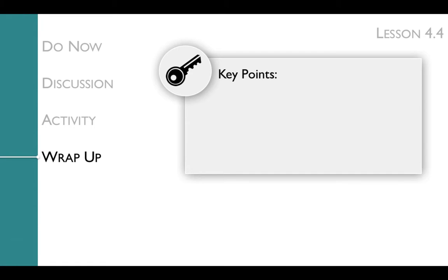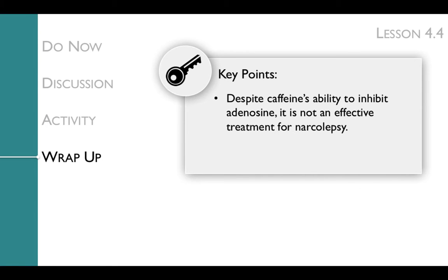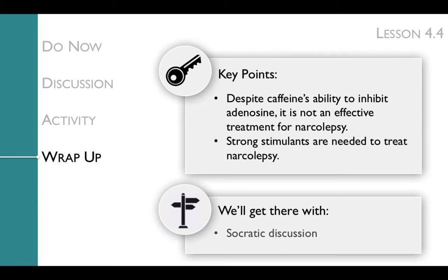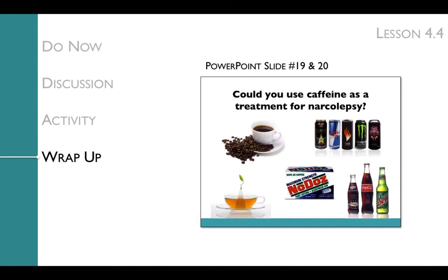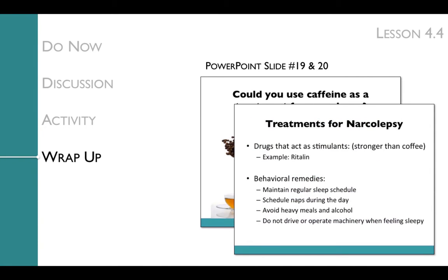The key points of the wrap-up are that despite caffeine's ability to inhibit adenosine, it's actually not an effective treatment for narcolepsy, and that strong stimulants are needed to treat narcolepsy. We'll get to these key points with a Socratic discussion. In the wrap-up, the class will refocus on the question of the day: could you use caffeine as a treatment for narcolepsy? After giving students five minutes to discuss this question again, now armed with knowledge of how caffeine works, you'll discuss the current treatments for narcolepsy, which include drugs that act as strong stimulants and behavioral remedies.